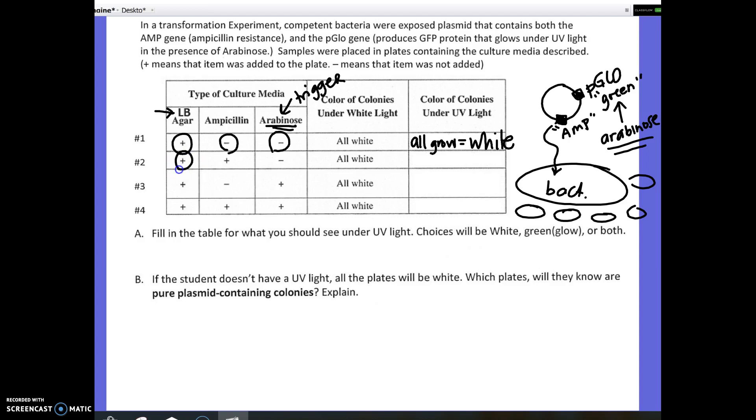All right, plate number two. We're giving them food, which is good, and we're adding ampicillin. Now, ampicillin, remember, this will kill any bacteria that did not pick up the plasmid. But, we're not adding any arabinose. And, arabinose is the trigger to make them glow. So, in this second plate, again, they're all going to be white. However, a little notation here, only the ones that picked up the plasmid will actually be growing on this plate, because the other ones will be killed by the ampicillin, but they're not going to be glowing.